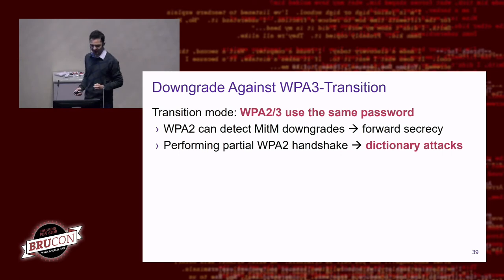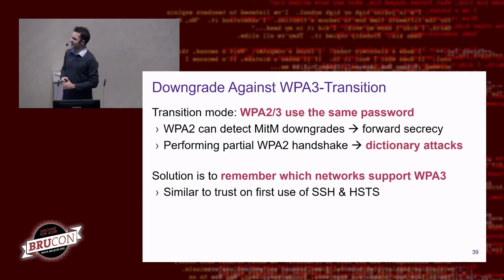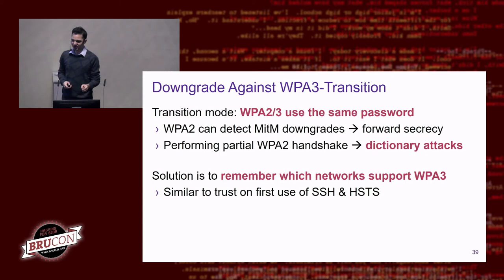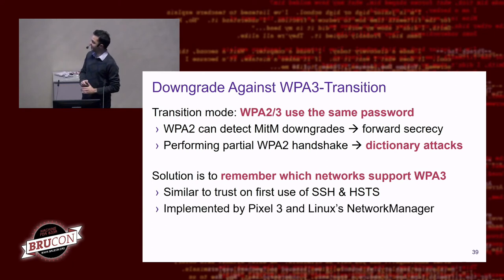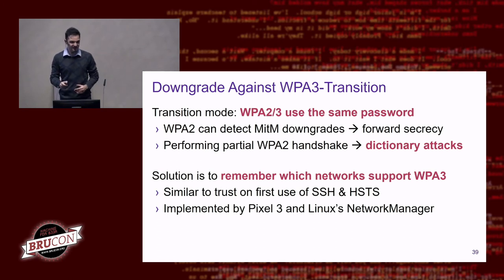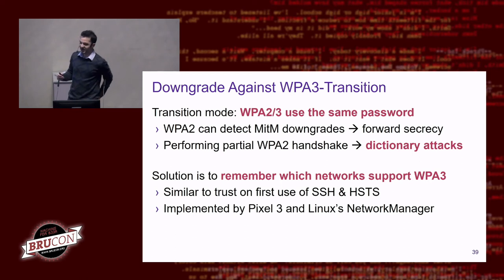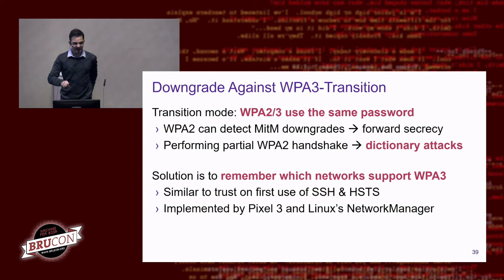A defense exists — not 100% perfect but makes attacks much harder: let clients remember if a network previously supported WPA3. If we previously connected using WPA3, we won't fall back to WPA2 in the future. This trust-on-first-use idea is similar to SSH's TOFU and HTTPS strict transport security. The Linux network manager now implements this defense, as does the Pixel 3 smartphone — once you connect to a WPA3 network, it won't automatically downgrade.